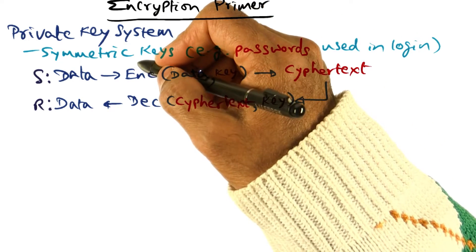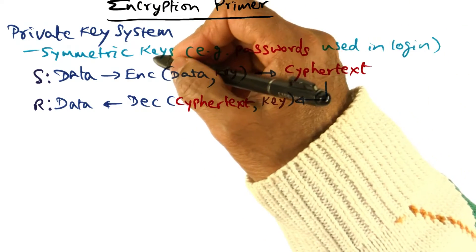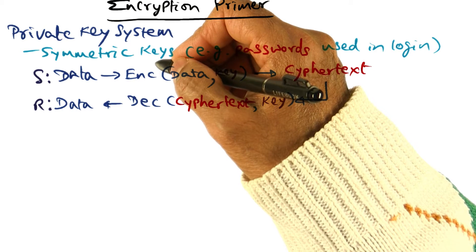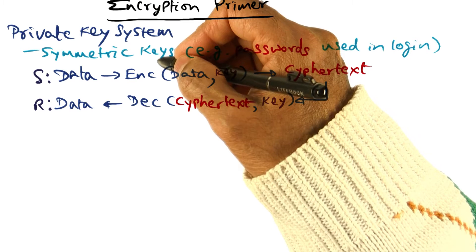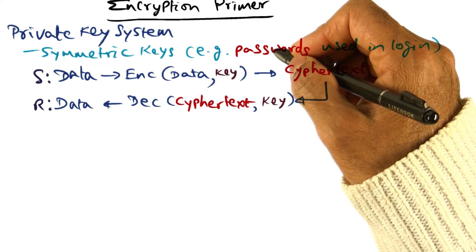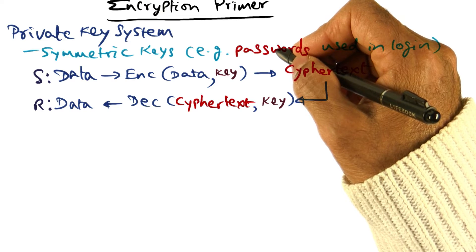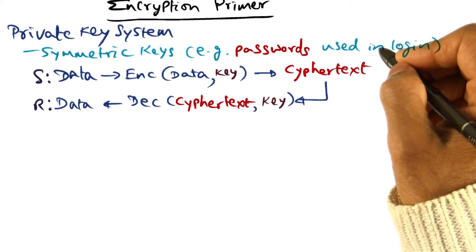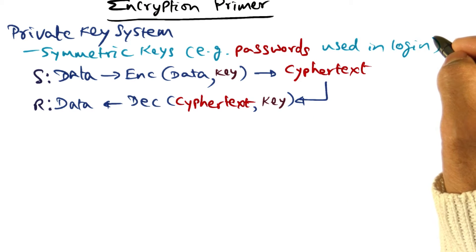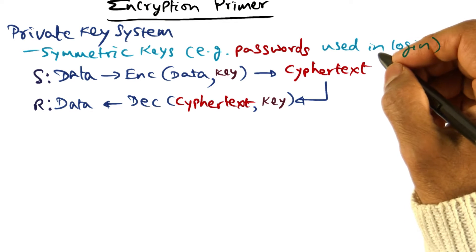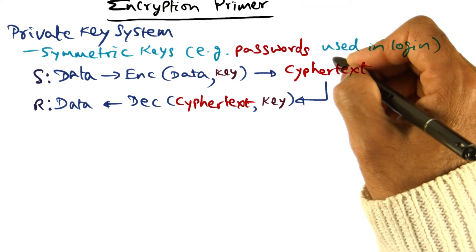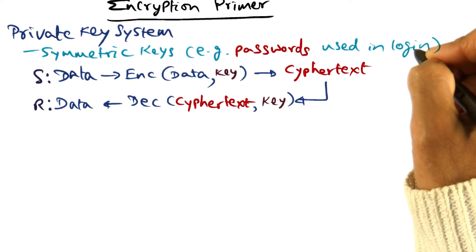In the private key cryptosystem, both the sender and the receiver use symmetric keys for encryption and decryption of the data. A common private key system that we all are using probably on an everyday basis is passwords. When we log into either a corporate network or university network, we use a username and password, and that is using a private key encryption system.